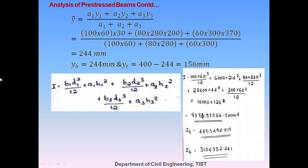With Y-top = 156 mm and Y-bottom = 244 mm determined, the next step is calculating the moment of inertia I. Since the section is asymmetrical, the parallel axis theorem is used: I = IG + A·h², where IG is the moment of inertia about the centroid of each portion and h is the distance from that portion's centroid to the whole section's centroid. Using this, I, Z-top, and Z-bottom are all calculated as Z = I/Y.